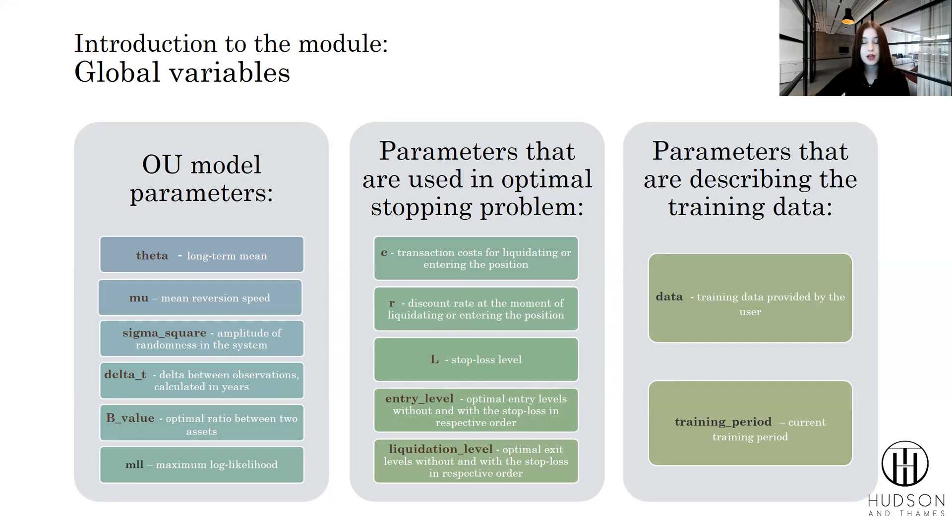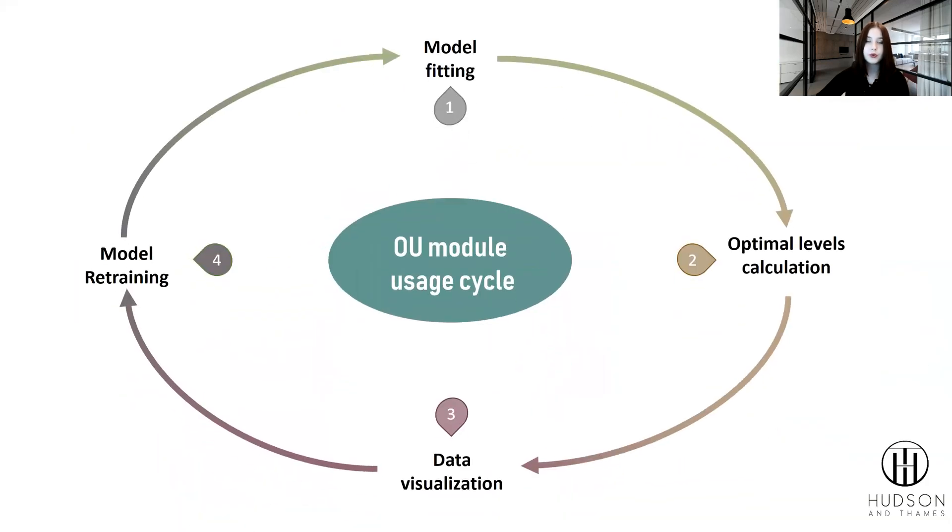What's most important is how the user interacts with the model. I present to you the OU model usage cycle. The first step would be the model fitting. When the user provides the data into the model, it fits it to get the best possible optimal mean reverting portfolio and fit the OU model as exactly as it can.